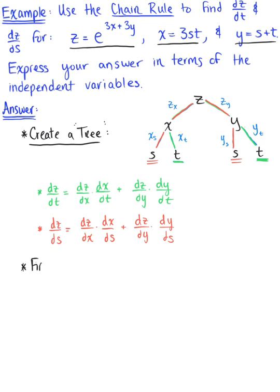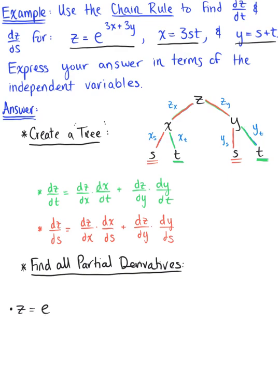Our next order of business is to find all the partial derivatives, going function by function. Starting with z, we are given that z equals the natural exponential raised to 3x plus 3y. We need two partial derivatives: the partial derivative of z with respect to x, which gives us 3 times e raised to 3x plus 3y, and very similarly the partial derivative of z with respect to y, which also gives us 3 times e raised to 3x plus 3y.